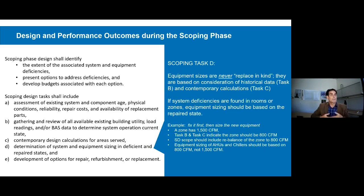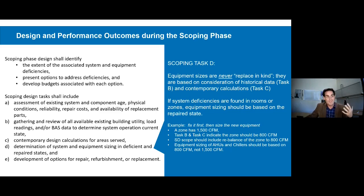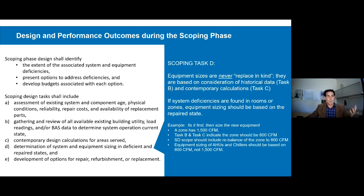Task D is determining equipment sizes. I'll point out that equipment sizing is step four on the list, which is to say that equipment sizing is not the first thing that we do. Saying that equipment is sized to replace in-kind is never acceptable. We want equipment to be sized based on the assessment of existing information and the contemporary design calculations — this is something that comes up time and time again in our scopes.